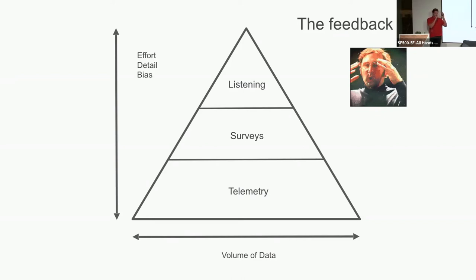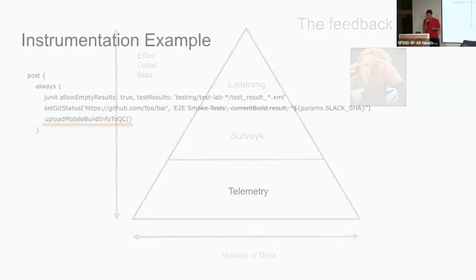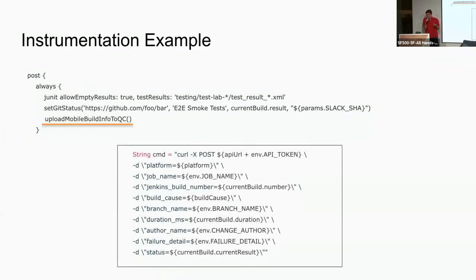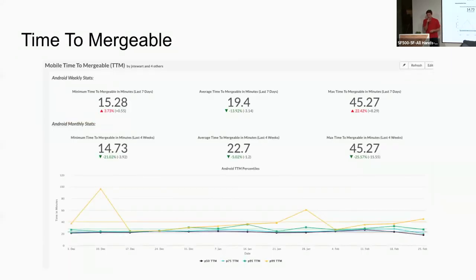Let me go into each of these. First, telemetry: it's amazing how much benefit you can get from a very simple script plugged into our CI pipeline and Jenkins that just uploads build stats about a build that just finished to the backend. It gathers whether it was successful, how long it took, and a few other metadata things.